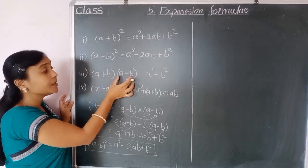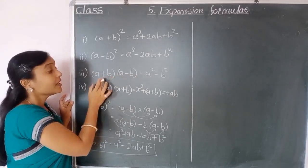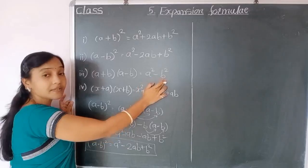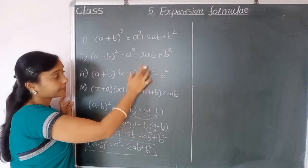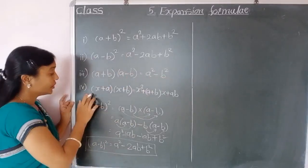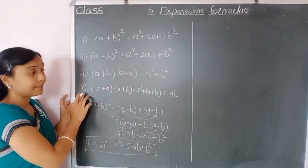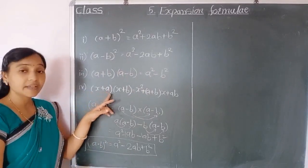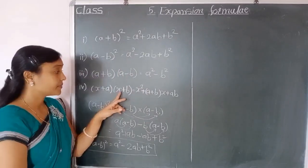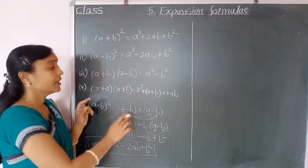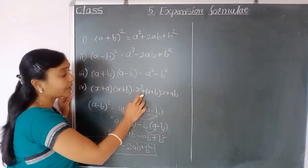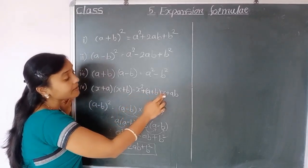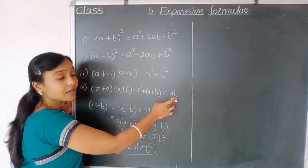Multiplying this bracket into this bracket, we get a squared minus b squared. Now, the fourth formula: x plus a into x plus b equals x squared plus a plus b in bracket, times x, plus ab.